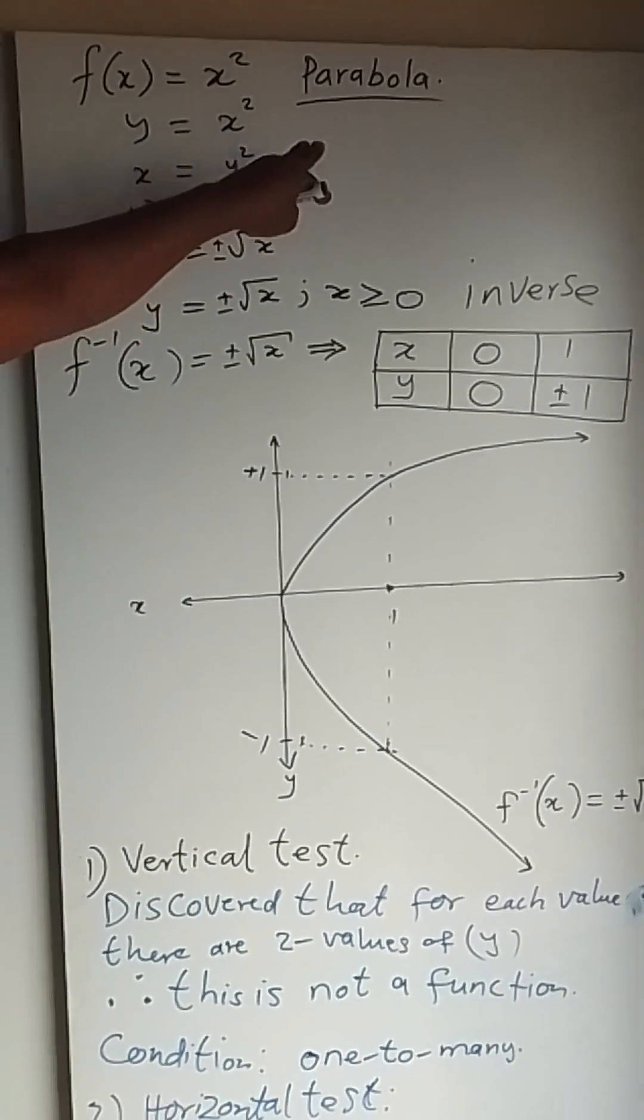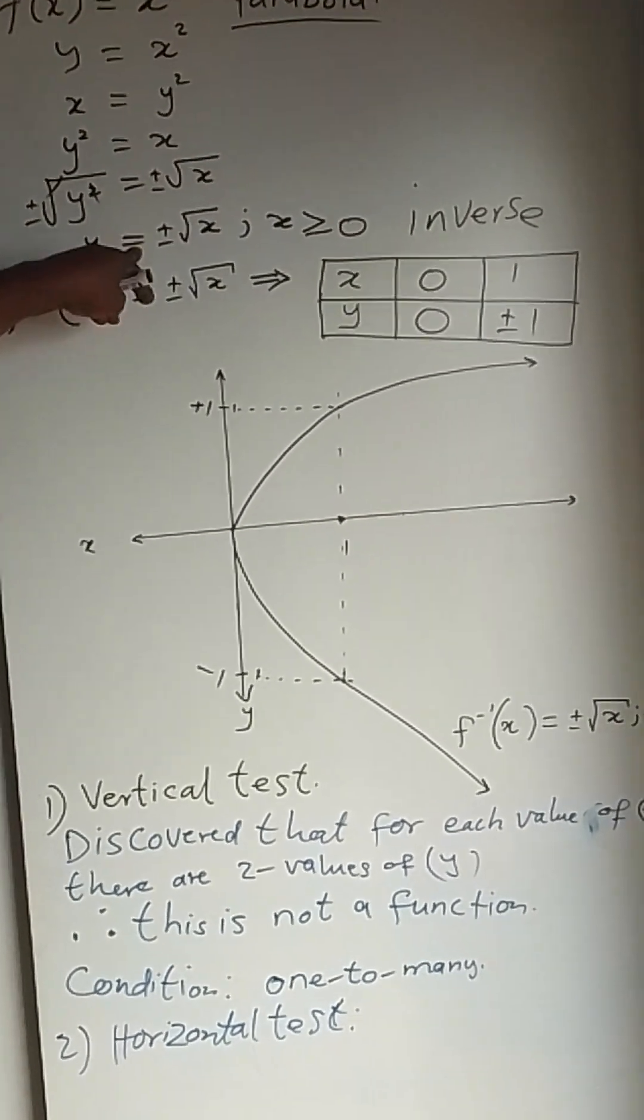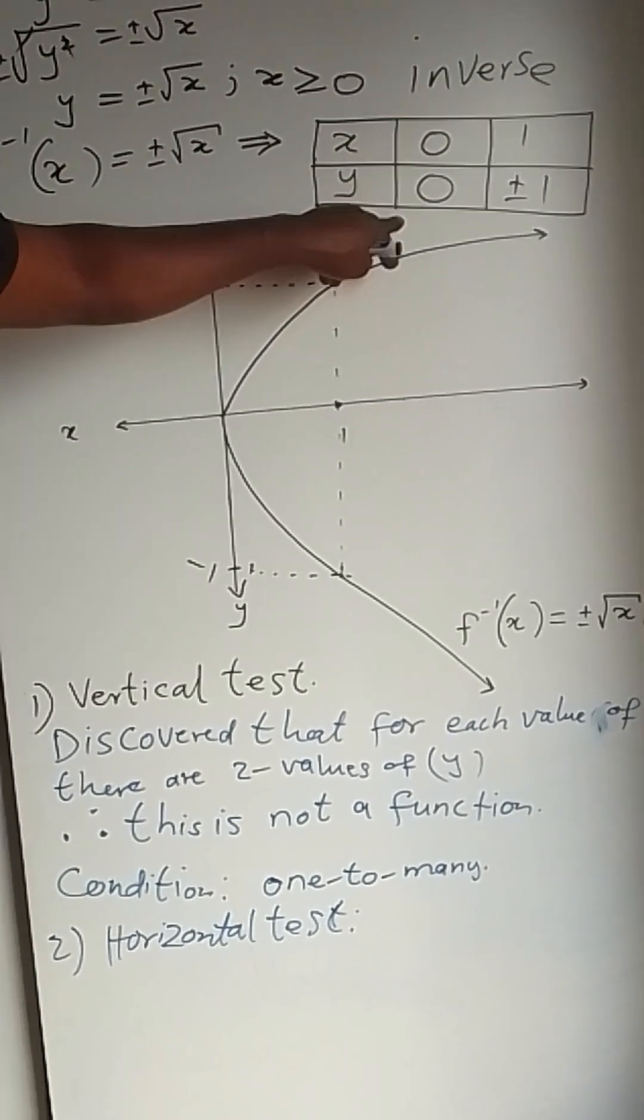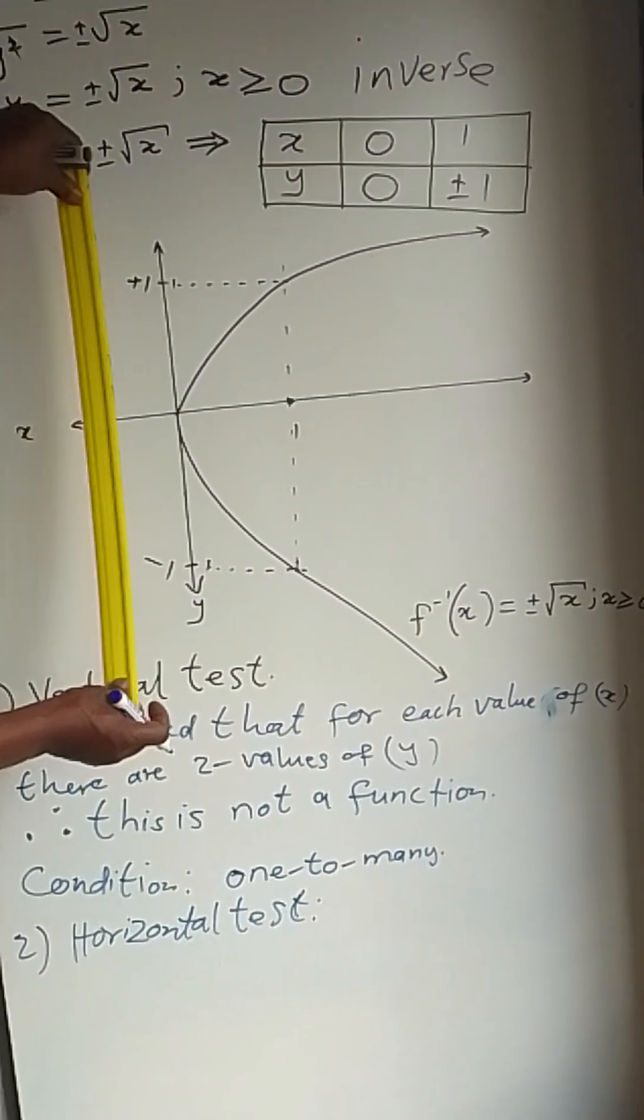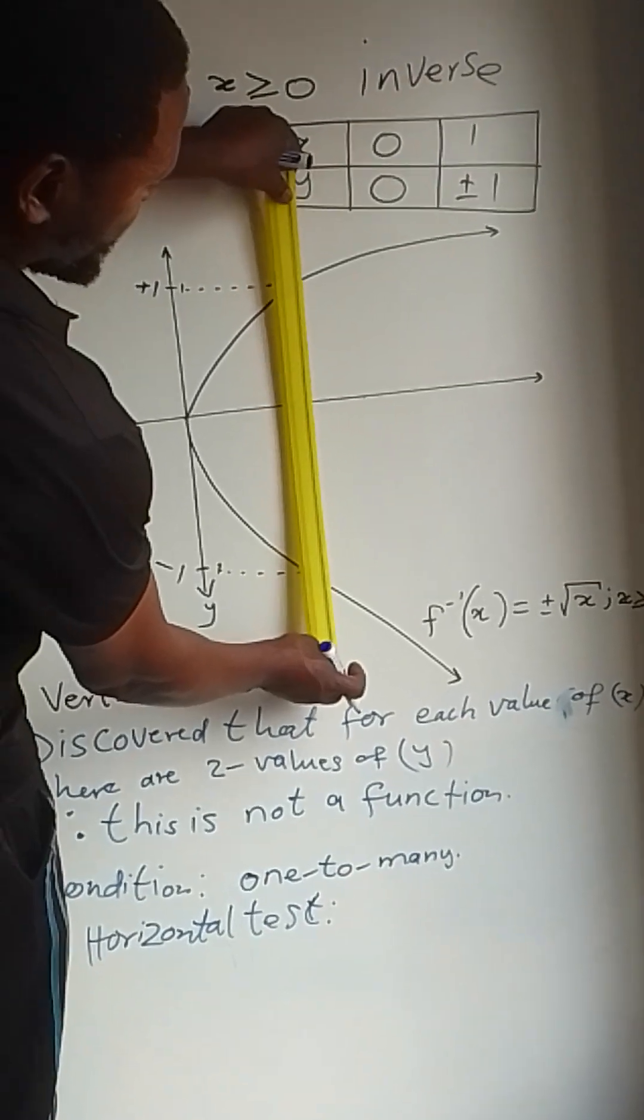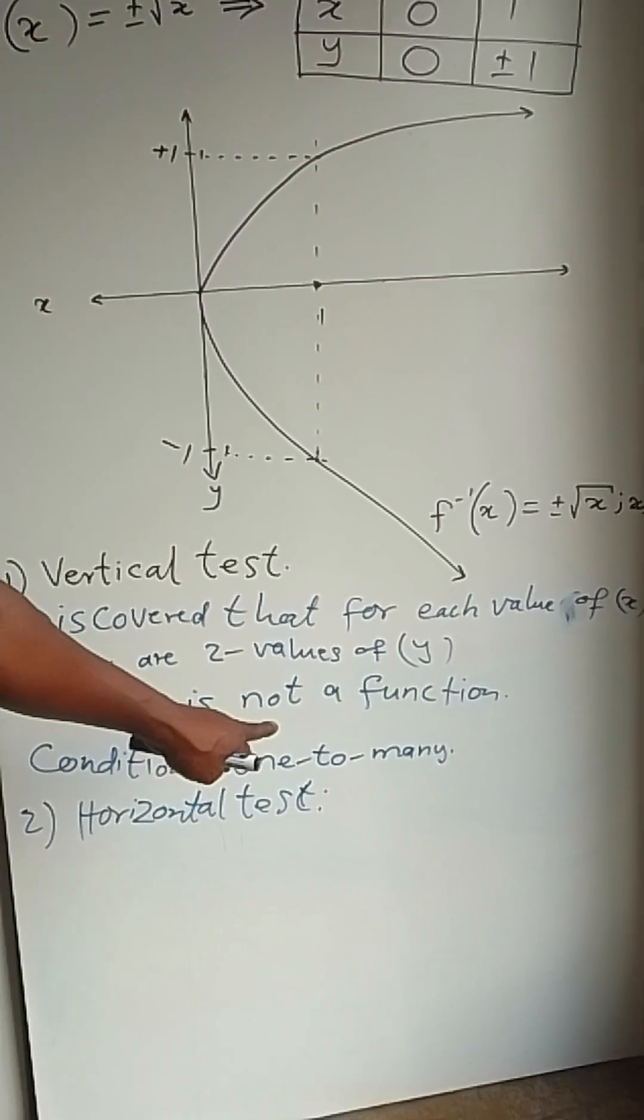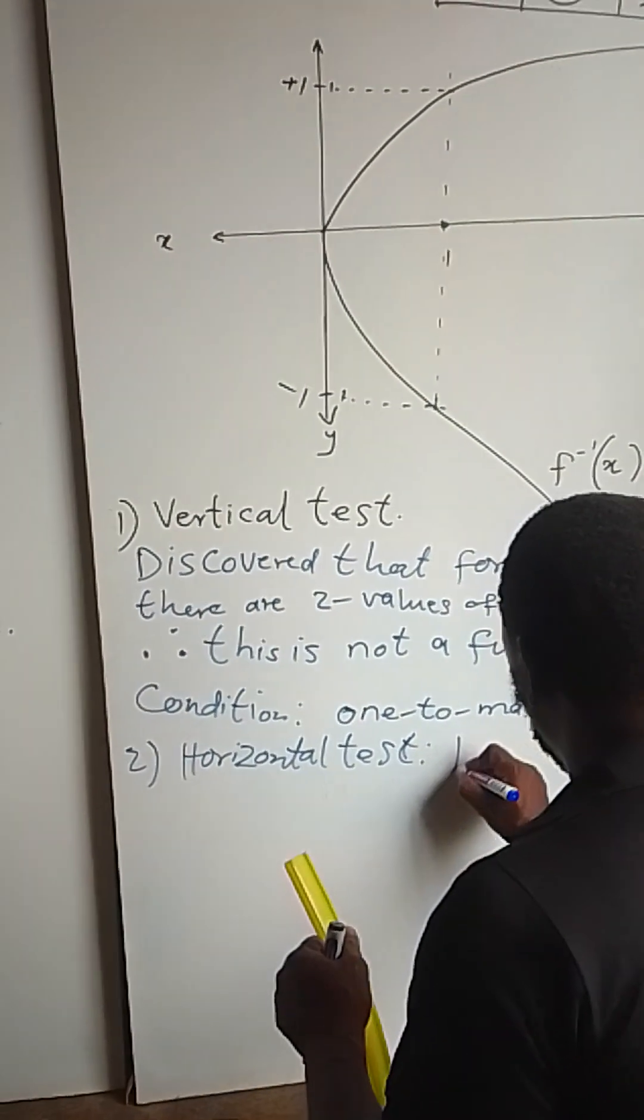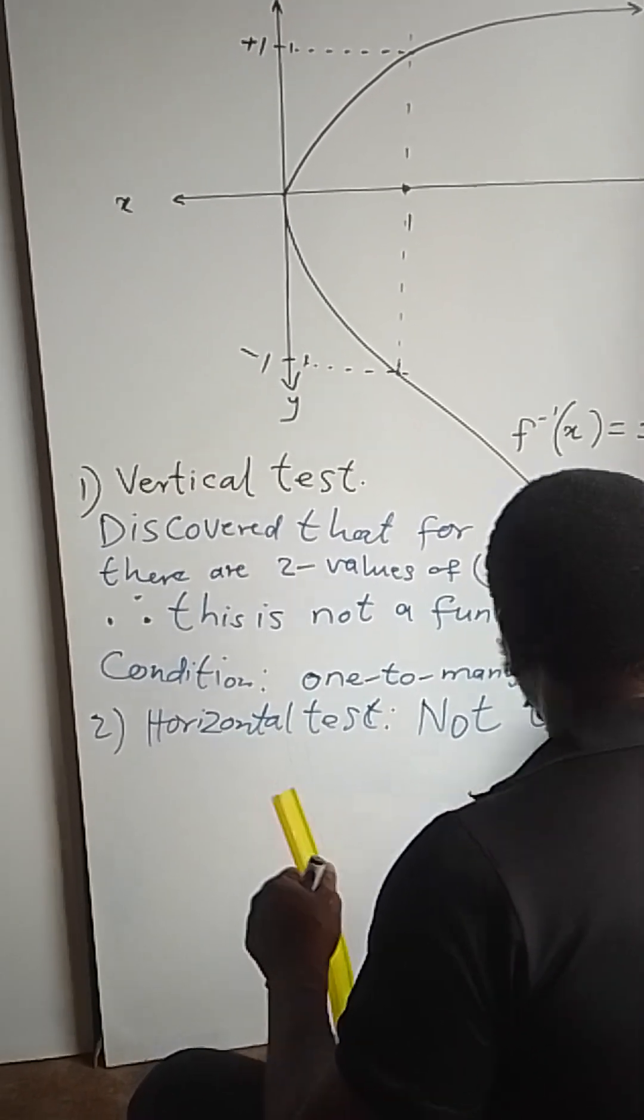Then we go to the third condition where we graph the very same parabola, then we change this parabola to make it an inverse. We find that the equation is going to be y equals plus or minus the square root of x, where x is greater than or equal to zero. Then we tabulate it and find that when x is 0 and 1, y is 0 and plus or minus 1. Then we perform a vertical test and find that there are two values of y that map to one value of x. Therefore, that does not qualify to be a function. This is not a function.